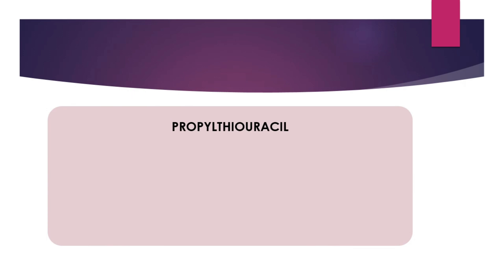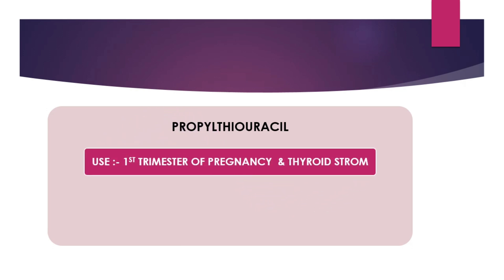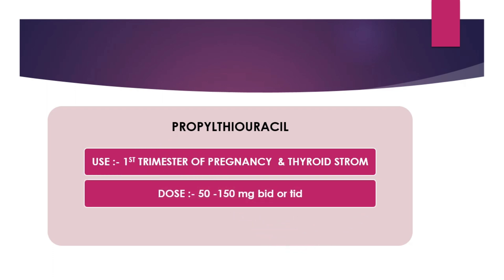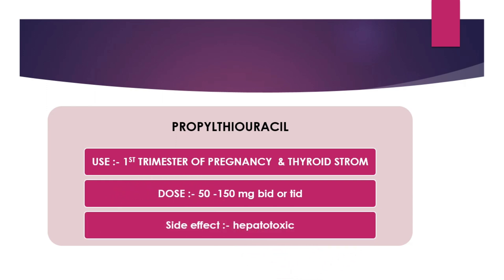The second drug available is propylthiouracil, which has only two indications: the first trimester of pregnancy and thyroid storm. Because carbamazole is teratogenic, we use propylthiouracil during the first trimester. The dose is 50 to 150 mg twice or three times daily. The main side effect of propylthiouracil is hepatotoxicity — it can lead to hepatitis. So we must monitor liver function tests when giving propylthiouracil, and that is why it should only be used during the first trimester. After that, we can switch to carbamazole.